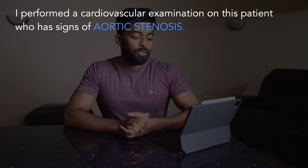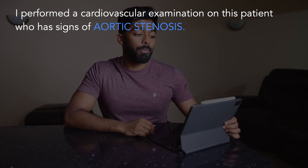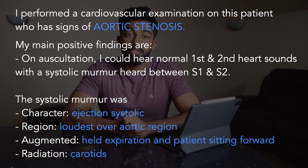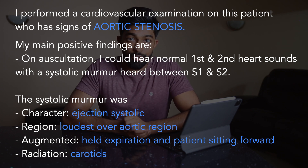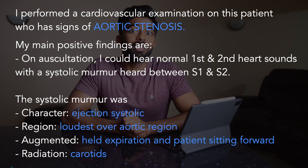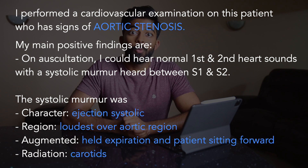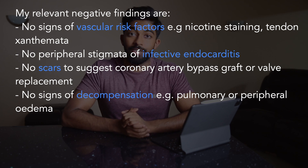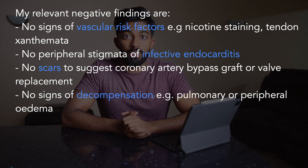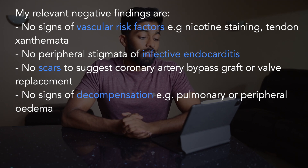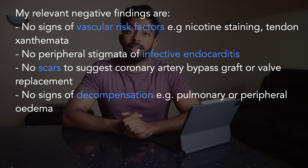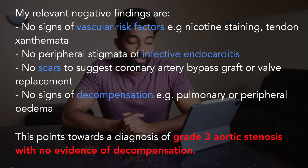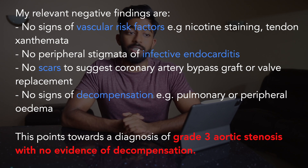I performed a cardiovascular examination on this patient who has signs suggestive of aortic stenosis. My main positive findings are: on auscultation, I could hear normal first and second heart sounds with a systolic murmur between S1 and S2. The systolic murmur was an ejection systolic murmur heard loudest over the aortic region, augmented on held expiration with the patient sitting forward, with radiation to the carotids. My relevant negative findings are that there are no signs of vascular risk factors such as nicotine staining or tendon xanthomata, no peripheral stigmata of infective endocarditis, no scars to suggest coronary artery bypass graft or valve replacement, and no signs of decompensation such as pulmonary or peripheral oedema.